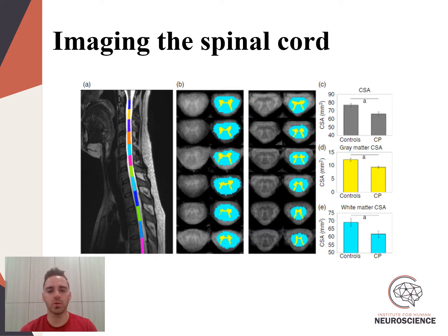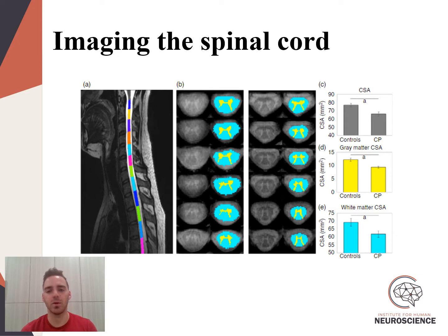Each of these individuals underwent a series of MRI scans. Shown in panel A on the left side of the screen is an image of the upper or cervical thoracic spinal cord in a representative subject with cerebral palsy. Utilizing the spinal cord toolbox, we were able to segment the gray matter as well as the white matter within the upper spinal cord, shown in panel B, in which gray matter is depicted in yellow and white matter is depicted in light blue.